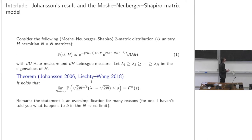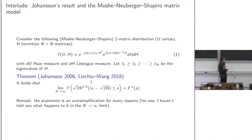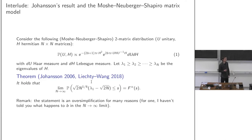Just as we have a two-partition model, here we have a two-matrix model. Mehta, Neuberger, and Shapiro were interested in such distributions because their bulk and edge behavior interpolates between easy and hard: the bulk interpolates between a Poisson point process and the sine kernel, while the edge interpolates between Gumbel and Tracy-Widom.